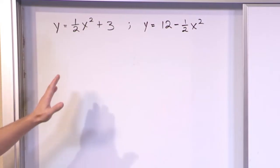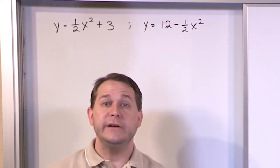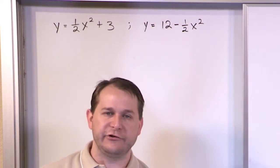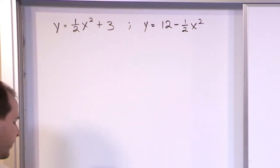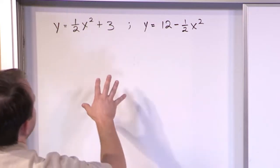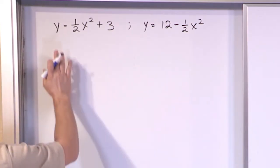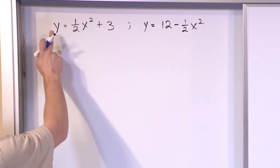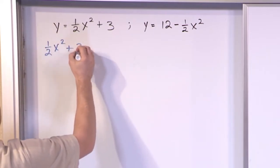Notice I didn't give you limits A and B. That's because when you're finding the volume of an enclosed region, you need to figure out where the two graphs intersect — those intersection points become the limits of integration, since they define the boundaries of the enclosed region. So assuming these two things cross, how do we figure out where they cross and at what values?